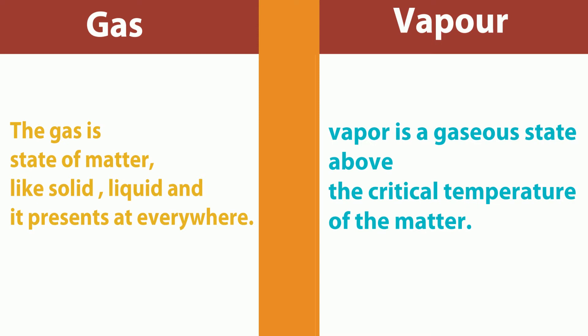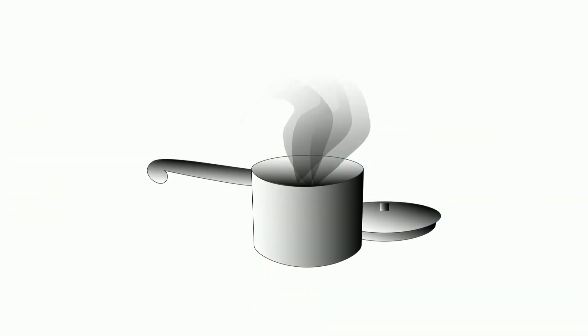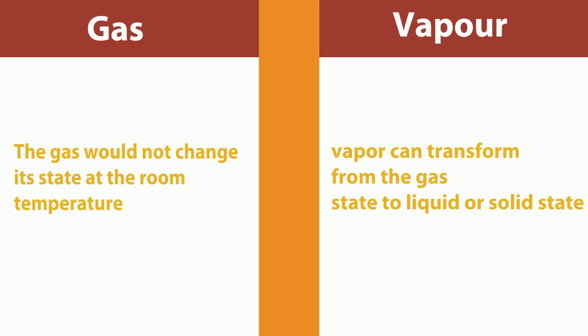As an example, if a liquid crosses its critical temperature and is converted into the gaseous phase, it is known as vapor. The gas would not change its state at room temperature. Vapor, on the other hand, can transform from the gas state to liquid state or solid state, and can return to its original state at room temperature.